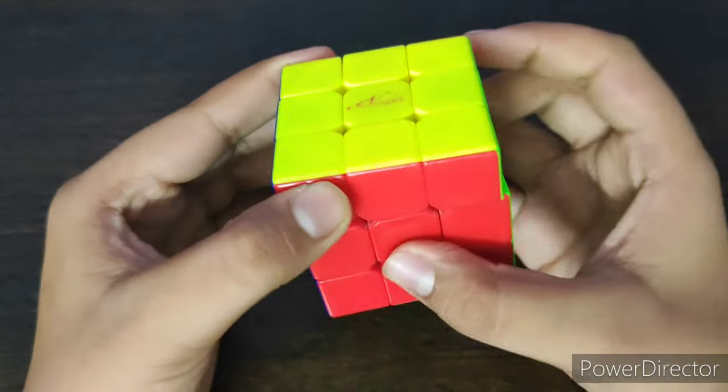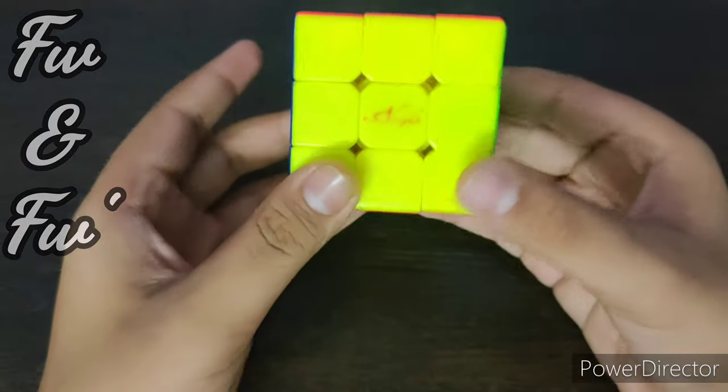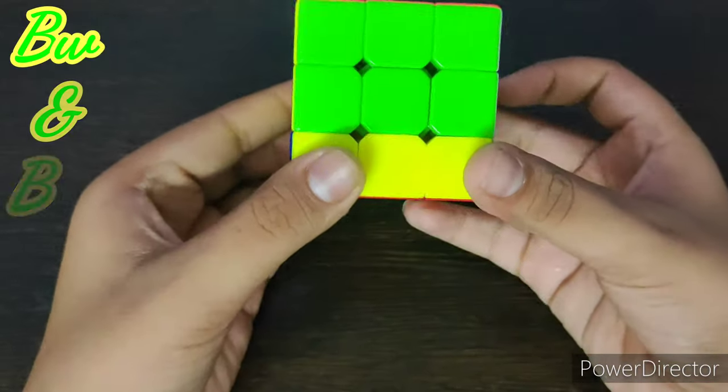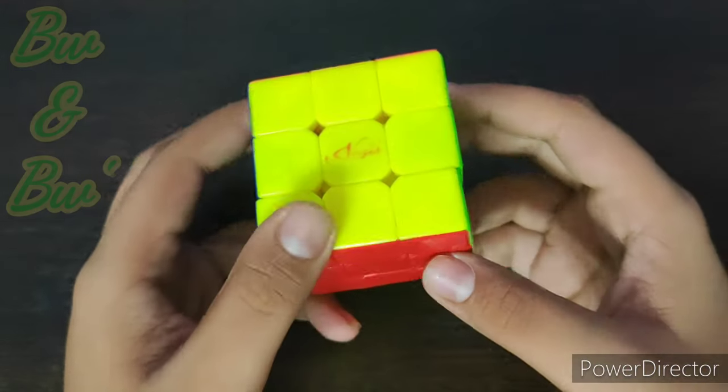Now the D wide means this side, and the D wide means this side. F wide like this. F wide prime, now the B go like this B wide and the B wide prime like this.